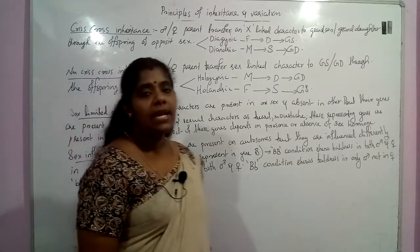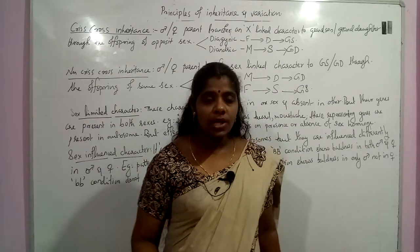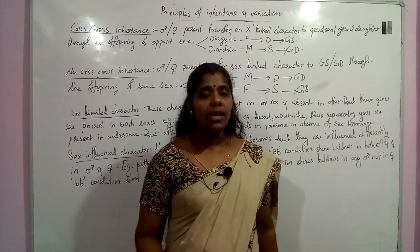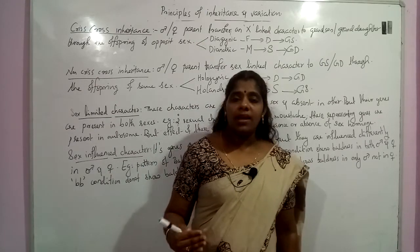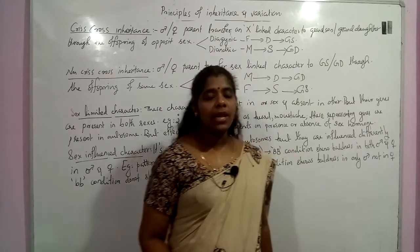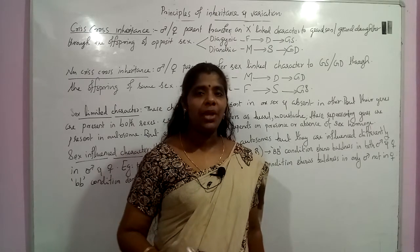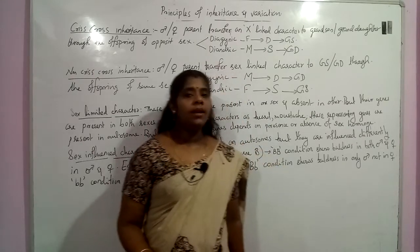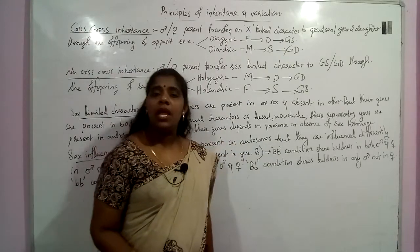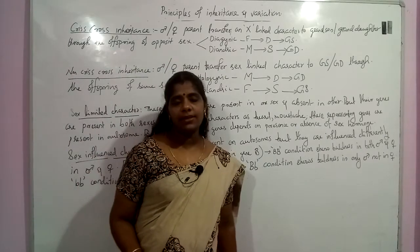Criss-Cross inheritance is an X-linked character passing from one generation to the next through their opposite sex offspring — through the daughter. In the Diantric condition, the X-linked character is passing from one generation through the male parent. This is all about Criss-Cross inheritance.